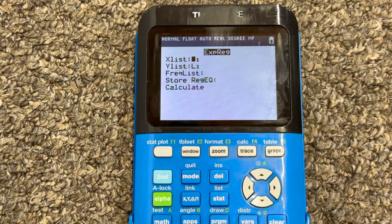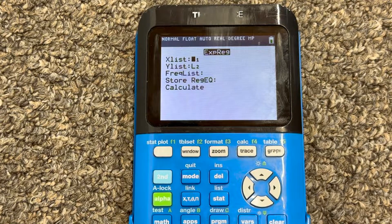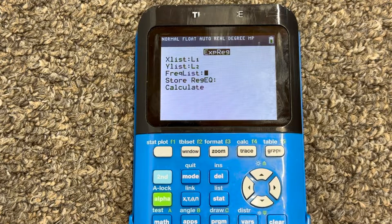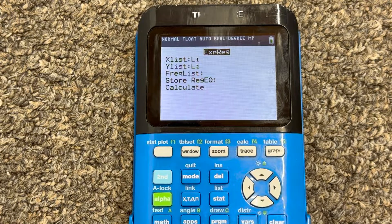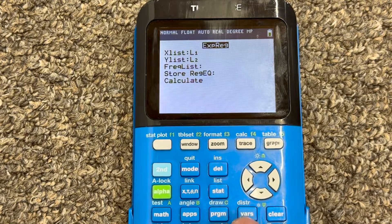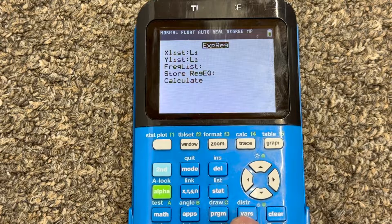I'm going to press enter and you can go down list one and list two. Those are the lists that we're using for our x and y coordinates. And if you want to store that equation, that regression equation, what you can do is see where it says vars right here, V-A-R-S, right below these arrow keys.